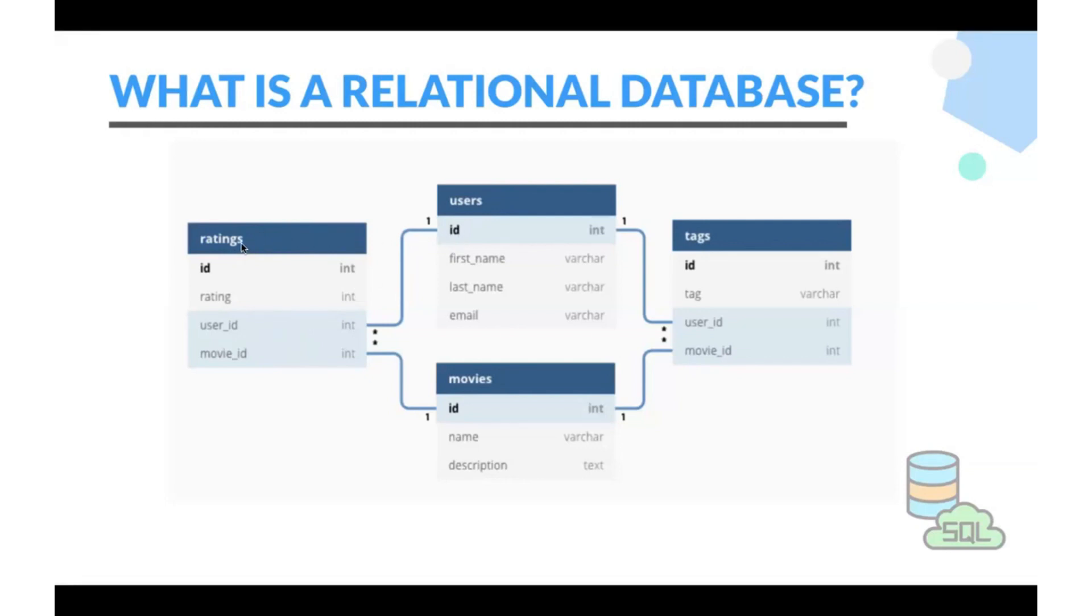Is there any relation between ratings table and movies table? Yes, there is relation between ratings and movies table. That is movies ID and ID. So that's what relational data, relational RDBMS.